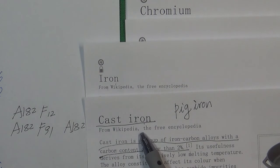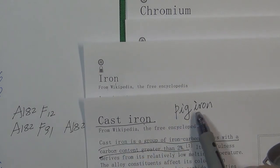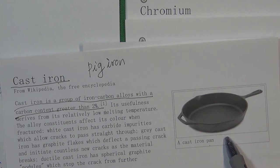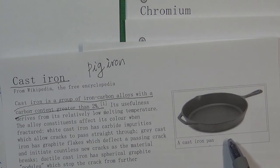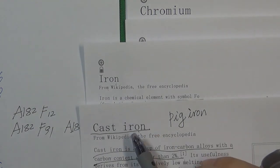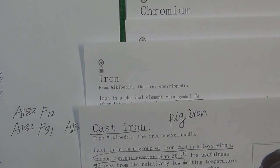Cast iron is actually one kind of unrefined iron from the earth — sometimes called pig iron, just like a cast iron pan. If you drop that pan on the ground, it is very easy to break because cast iron is very brittle. So first, I want to clarify those different irons because it is very easy to get confused.